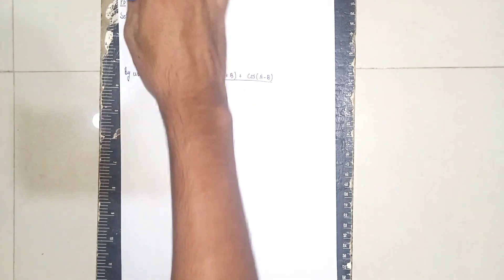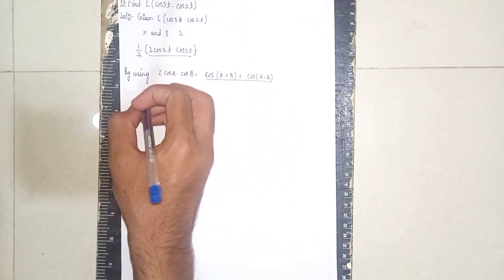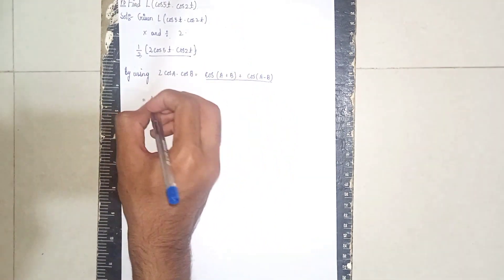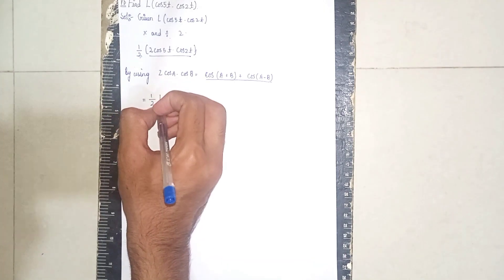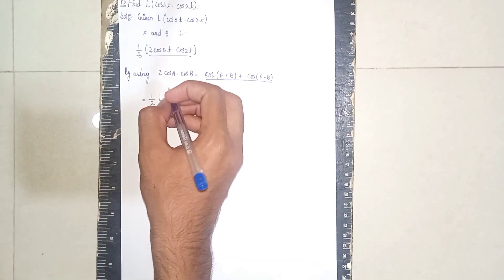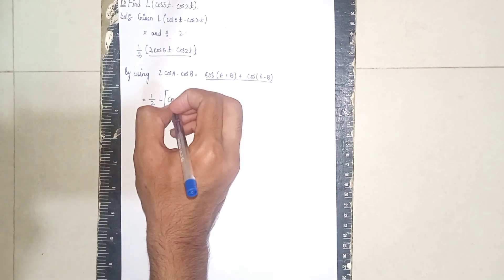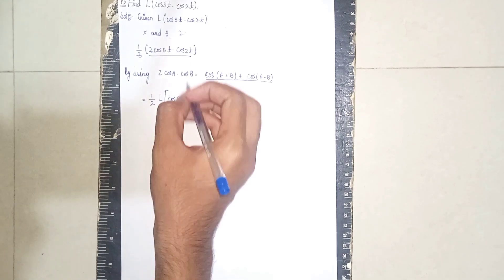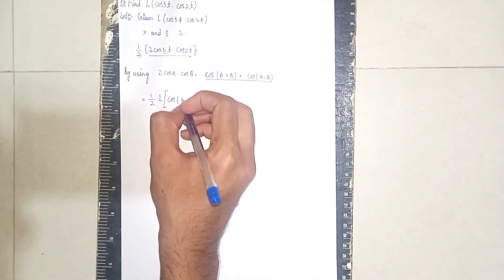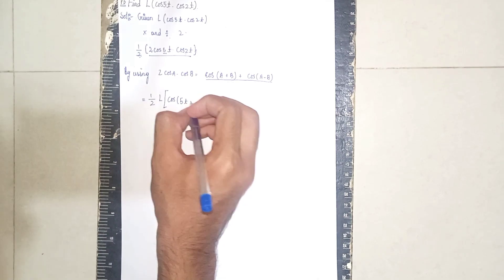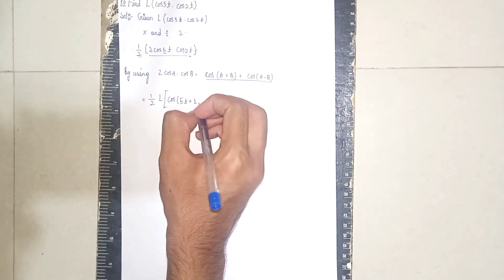Now substitute: it becomes one-half times Laplace — open the bracket — cos(A+B) where A is 7t, so it becomes cos(7t + 2t), which is cos(9t)... wait, 5t plus 2t.